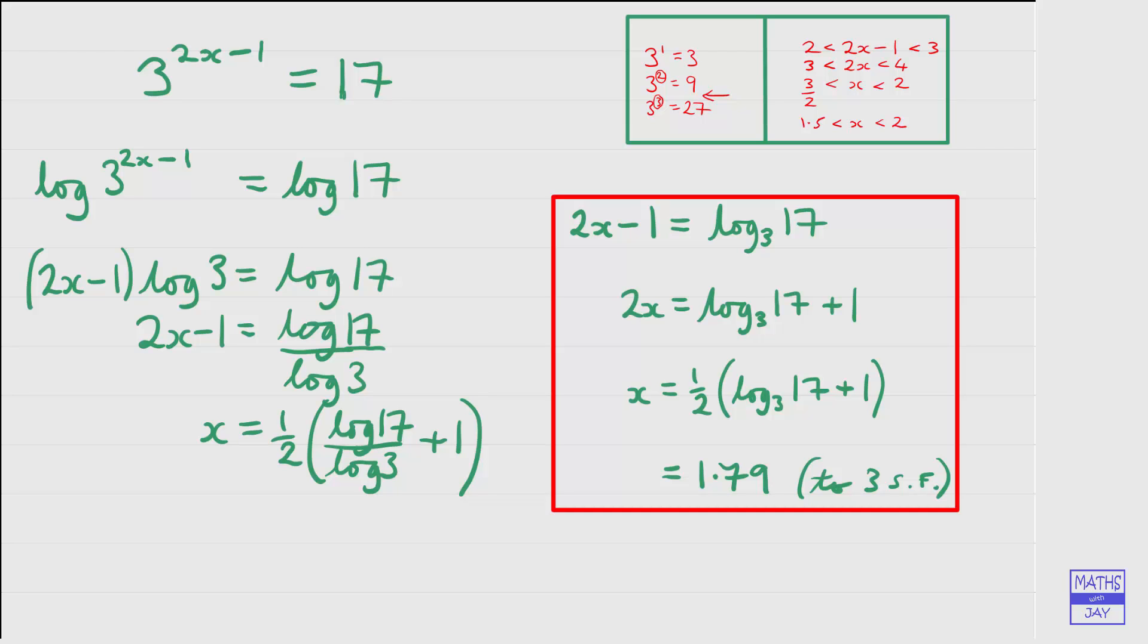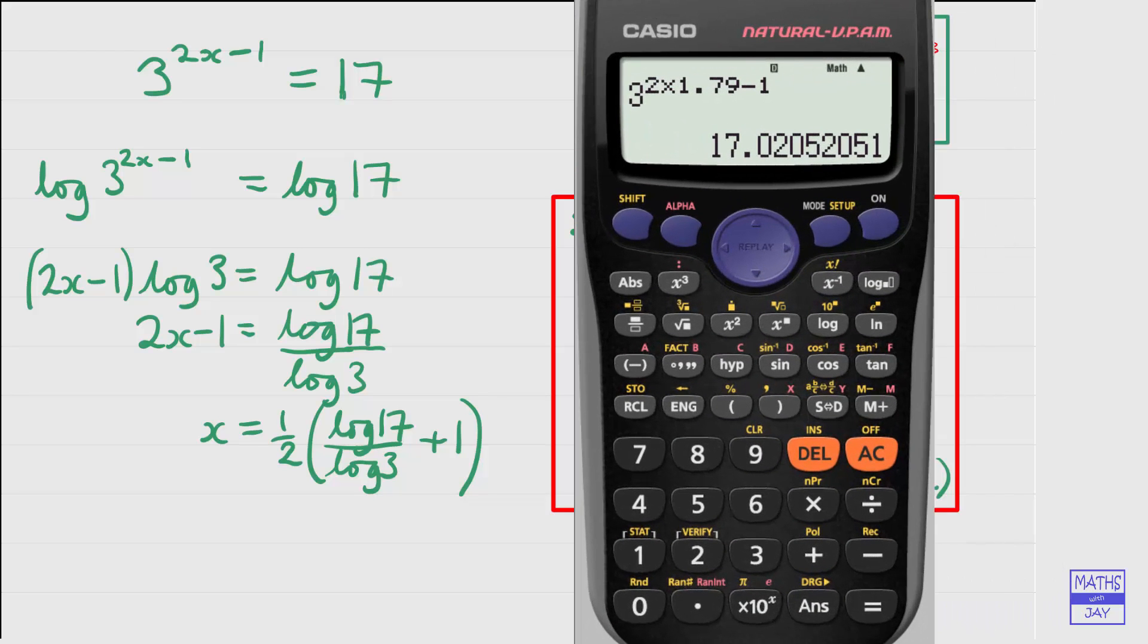So let's key that into the calculator. So we want a half, first of all, so one way of doing that is to use the fraction key, and then the right arrow key on the replay button and a multiplication and then an open bracket. And we're going to divide one log by another log, so another fraction there. And this time we're taking logs to base 10, so we're using the log button and we've got 17.